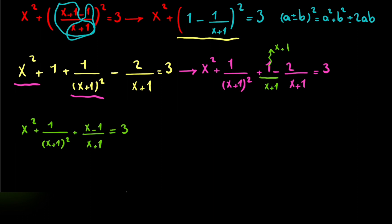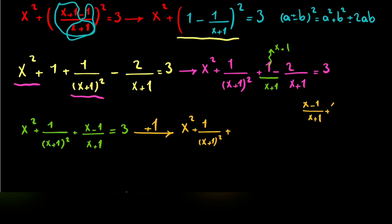Now it's better for us to make a perfect square on the left side. So we add plus 1 to both sides. On the left side we write x squared plus 1 divided by x plus 1 squared, plus x minus 1 divided by x plus 1 plus 1. Using the same denominator, the top becomes 2x divided by x plus 1. On the right side we write 4.